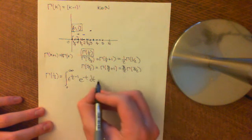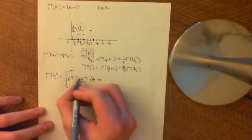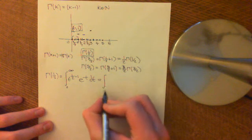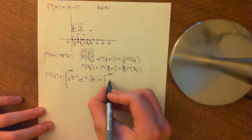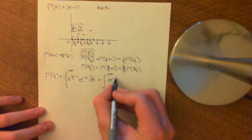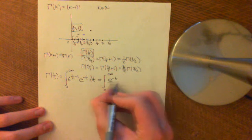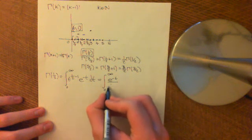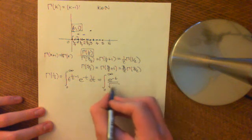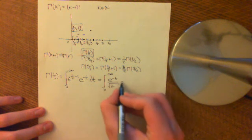A half minus 1 is just negative a half, so what we end up with is the integral from zero to infinity, e to the negative t over the square root of t, dt.